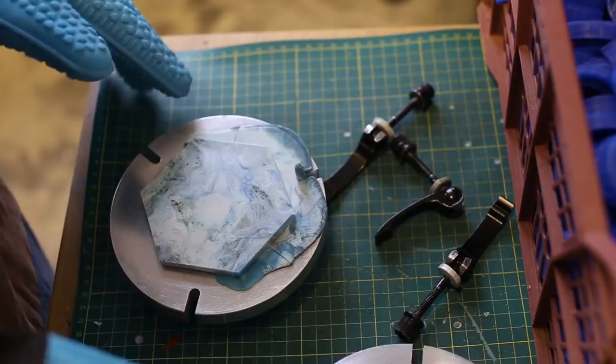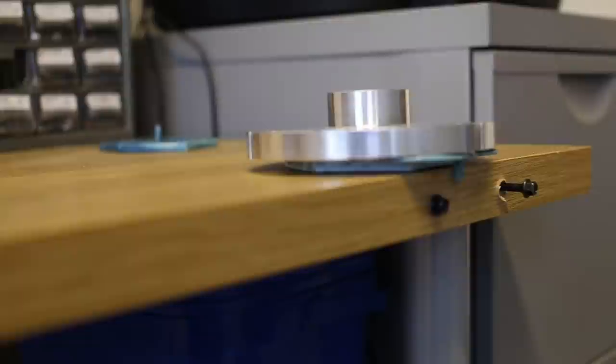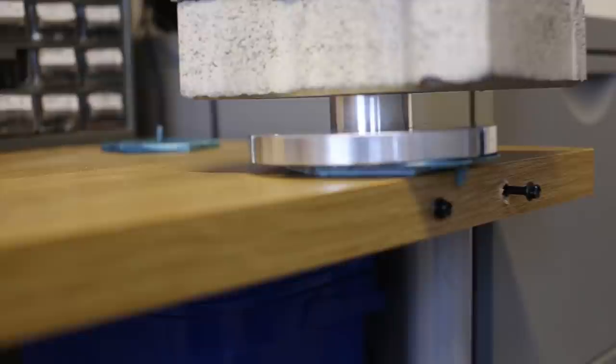After opening the mold, I don't remove the coaster yet. I turn it around and put it on a flat surface, then add some bricks on top. This prevents the coaster from bending due to material shrinkage.